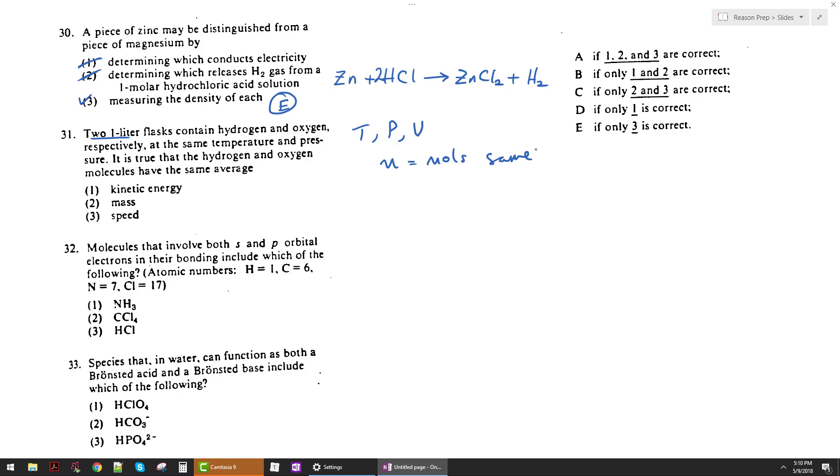We also know, looking at 1, that the kinetic energy, the average kinetic energy would have to be the same. Because that's what temperature does. As temperature increases, it increases average kinetic energy. And you can broadly define the average kinetic energy of any gas, no matter if it's hydrogen, or oxygen, or argon, or whatever, by that temperature. So given that they have the same temperature, they by definition have the same kinetic energy. So that's true.